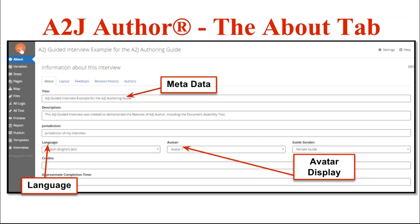The first tab is the About tab. The About tab is where you as the author place metadata about the interview itself and set certain variables that will dictate how the interview looks to the end user. Metadata includes information like the title of the interview, a description, the jurisdiction where this interview is going to be used. You can choose the language — A to J Author currently supports 14 different languages. You can set the avatar's skin tone — skin tone 1, 2, and 3 — and you can also select the gender for the guide avatar.